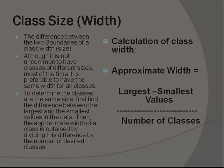The class width is the difference between the two boundaries of a class. Although it is not uncommon to have classes of different sizes, most of the time it is preferable to have the same width for all classes.